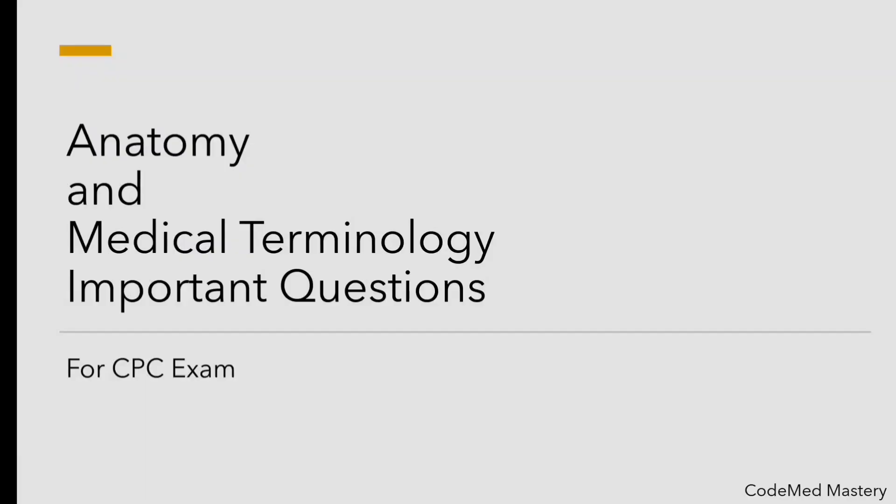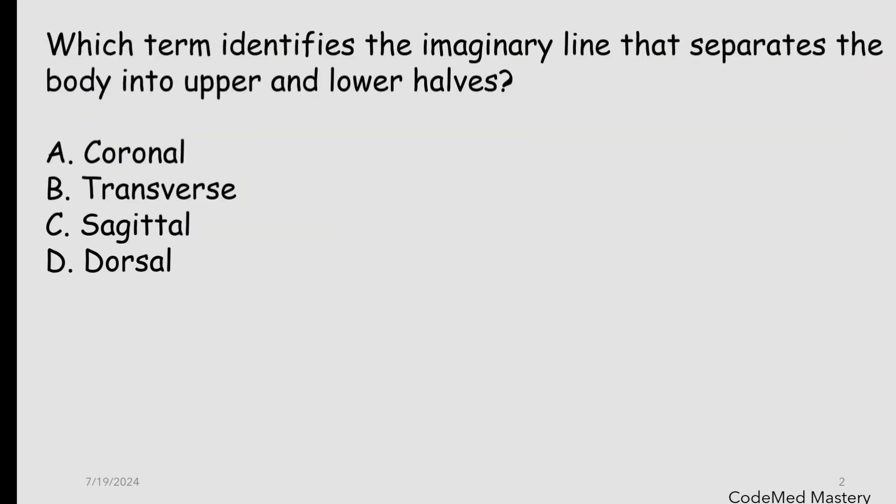Hello everyone, welcome back to my channel. Today we'll practice some anatomy and medical terminology — important questions for the CPC exam. Let's start with the first question: which term identifies the imaginary line that separates the body into upper and lower halves? Option A: coronal. Option B: transverse. Option C: sagittal. Option D: dorsal. The right answer is option B.